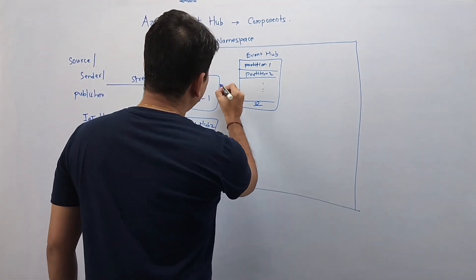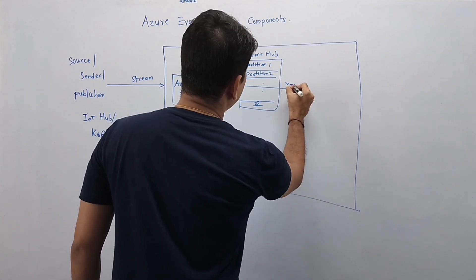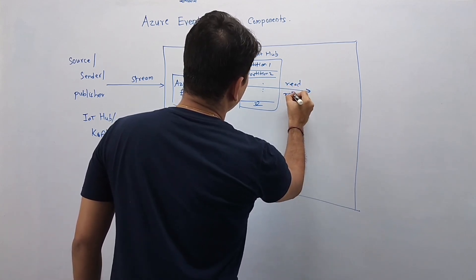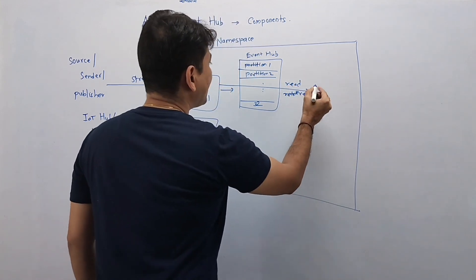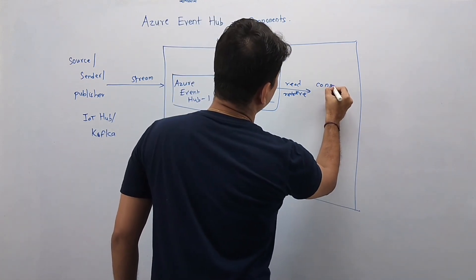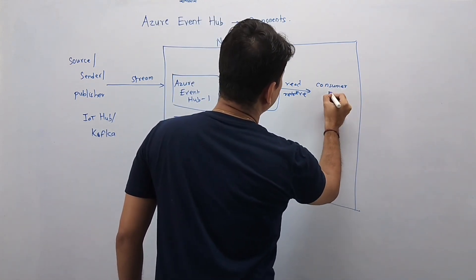To read data from this Event Hub, so we'll say read or retrieve, we have consumer group. So say this is our consumer group 1.